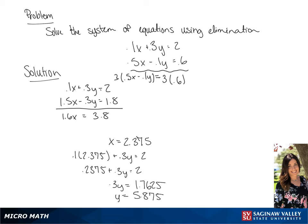If we divide both sides by 0.3, we get y equals 5.875. So the solution to our system of equations is 2.375, 5.875.